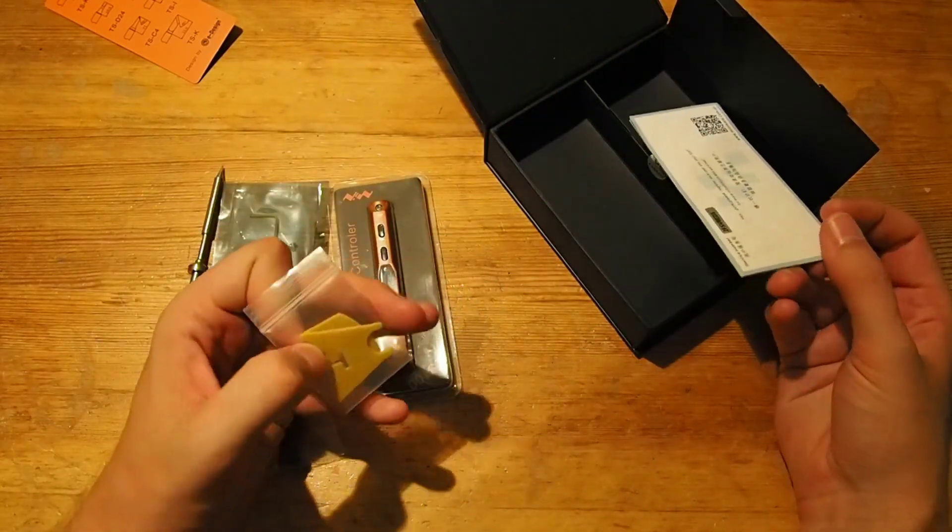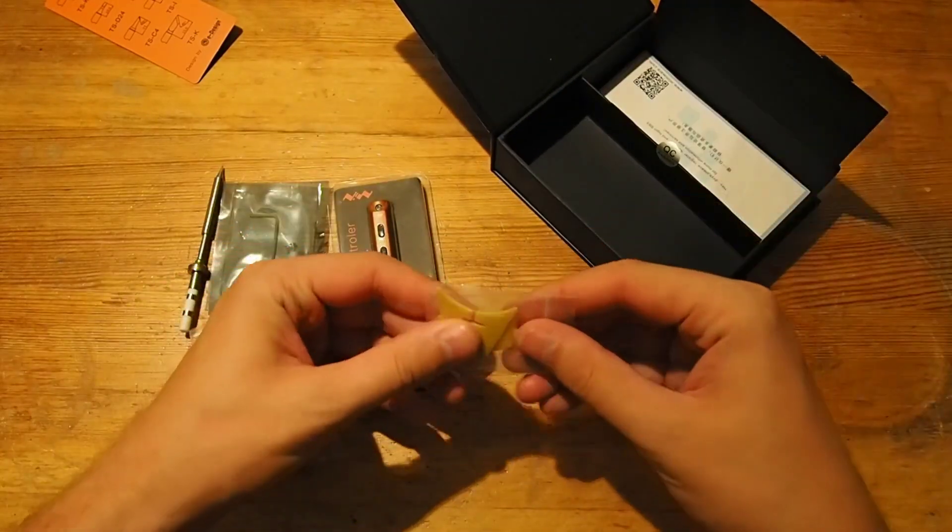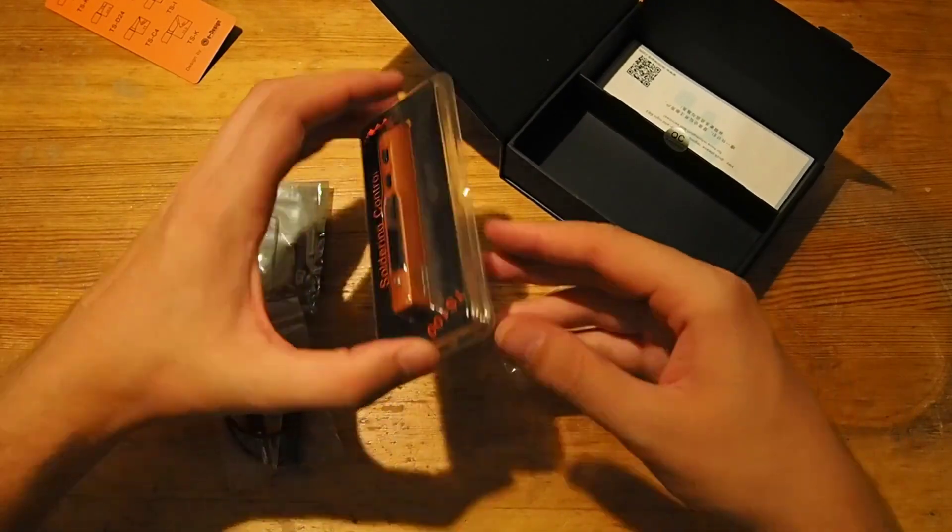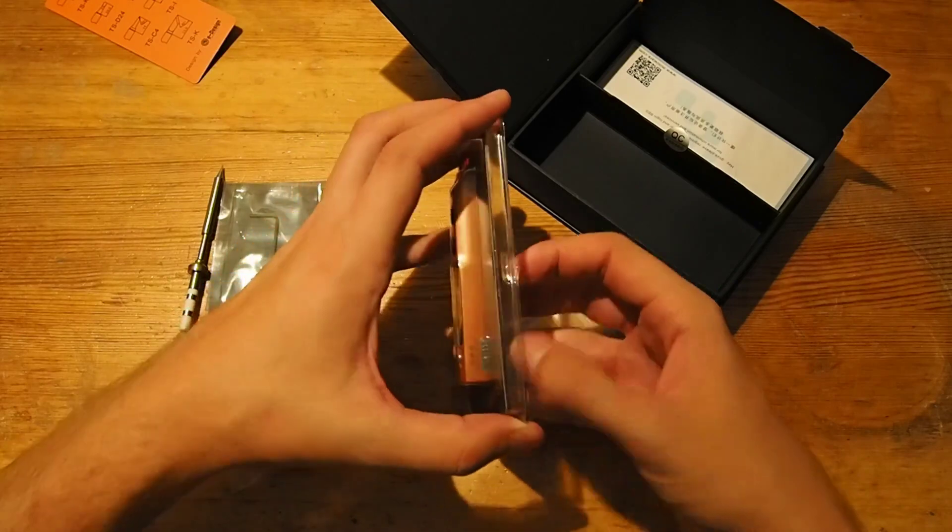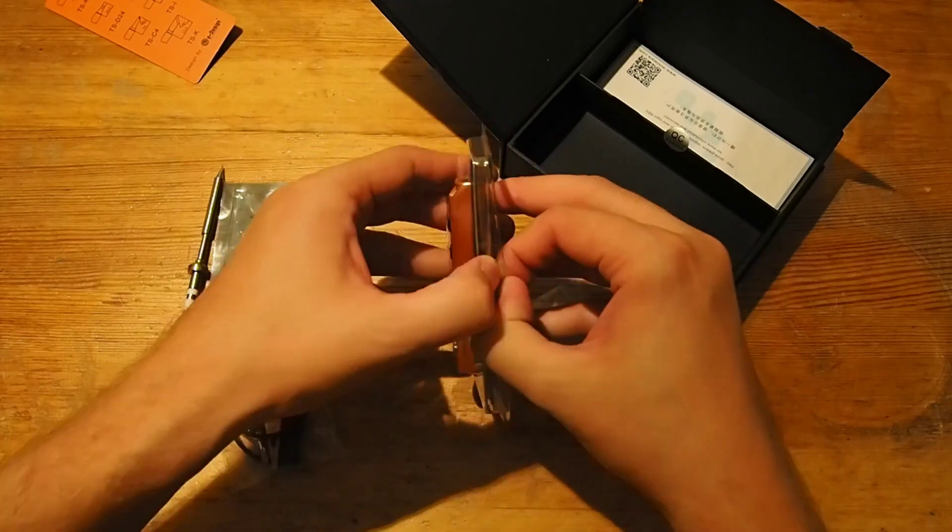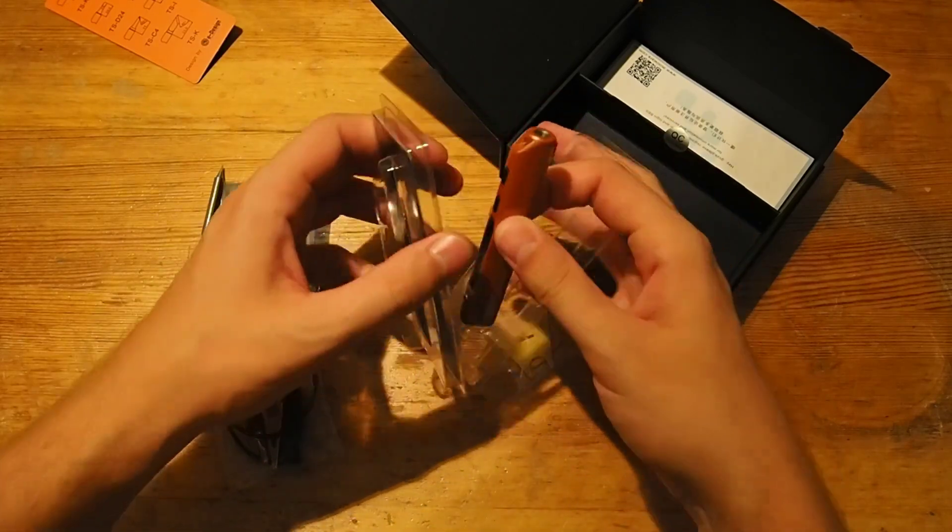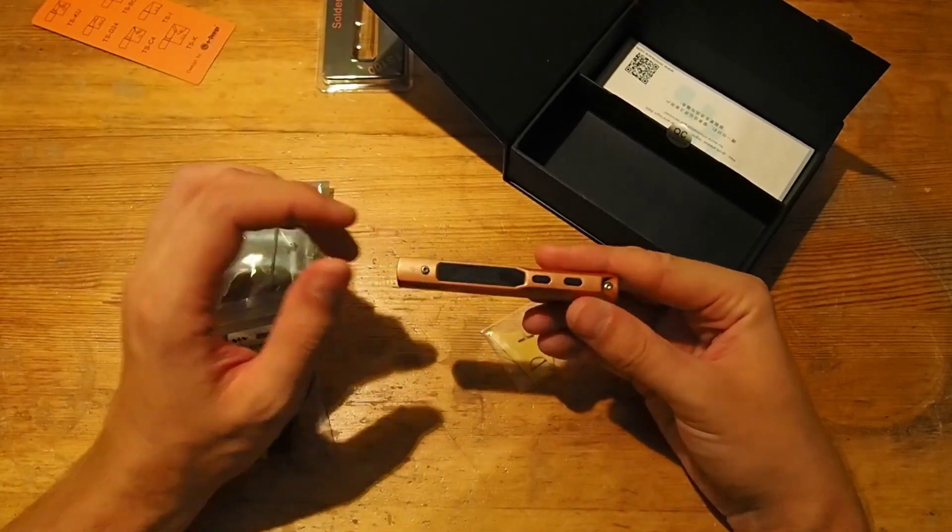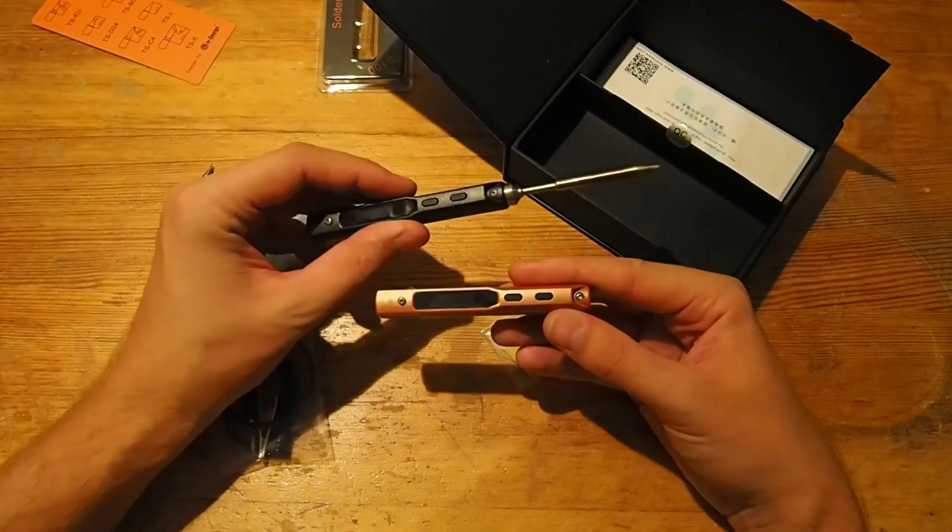The stand seems to be made of some glass fiber, I think. Let's open up the upgraded TS100, that now comes in the color brown, in comparison to the original one that's black.